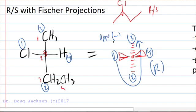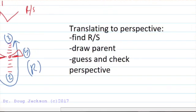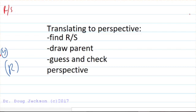Because group 4 is coming at us here. So this is an R configuration. And so if we wanted to translate the R configuration into a perspective, what we could do is just draw the parent chain after we found R and S. We want it to be R. And then we'll guess and check.